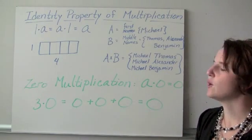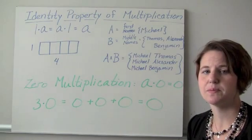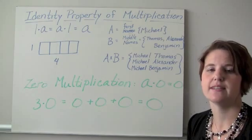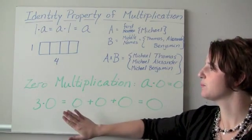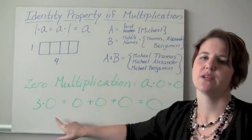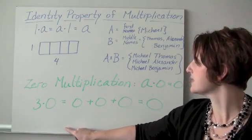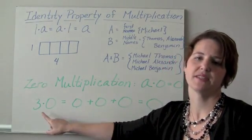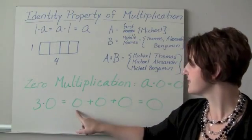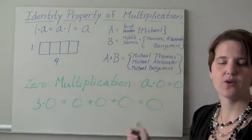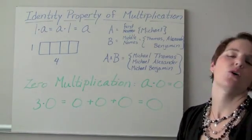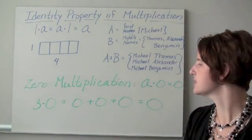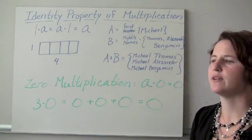Another important multiplication property is the zero multiplication property, which says that when you multiply by zero, you get zero. Using the repeated addition model, three times zero means I have three groups of zero: zero plus zero plus zero. By the zero addition property, adding zero doesn't change the sum, so zero plus zero plus zero equals zero.